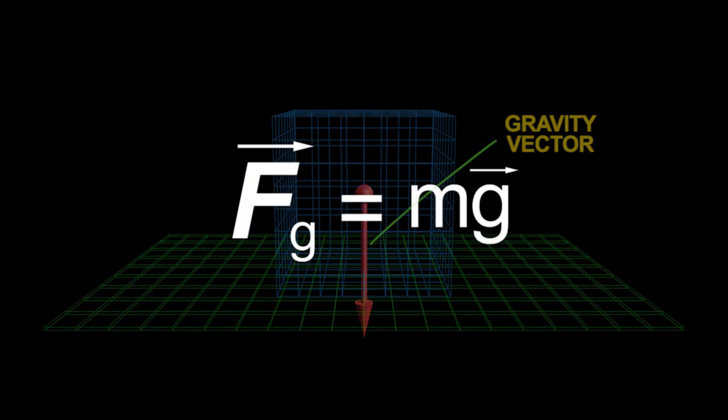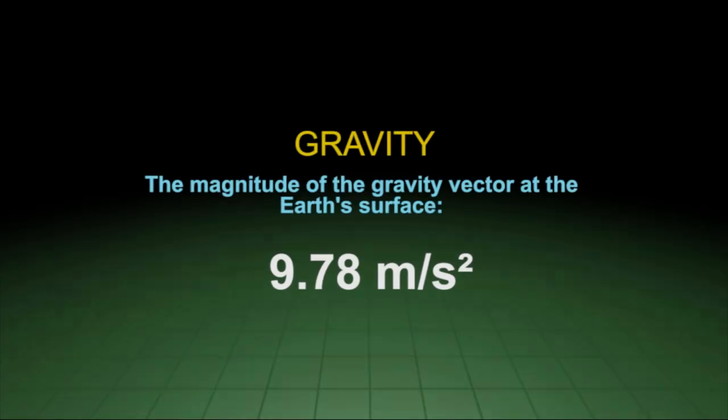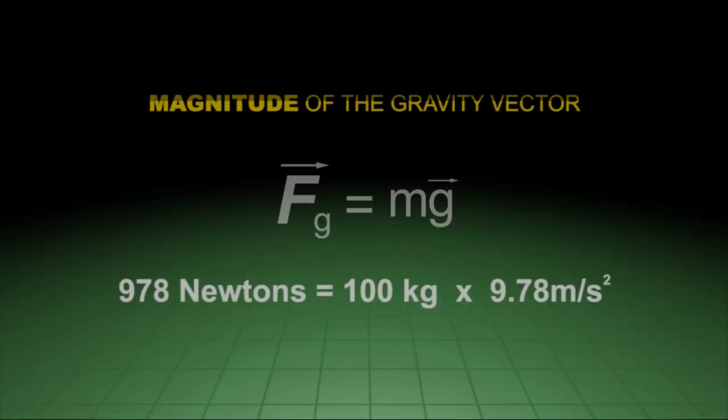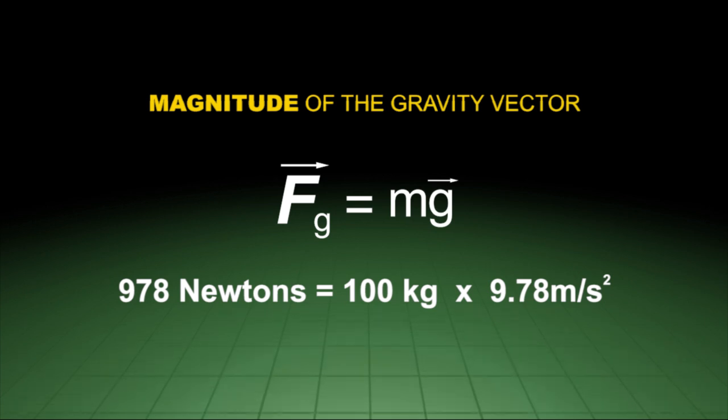Weight, the gravity vector, equals mass times gravity. If we know how much mass an object has, we can multiply it by the force of gravity at the Earth's surface to get the result. In the case of a 100 kg box, the force pushing down upon the resting surface is 978 newtons.